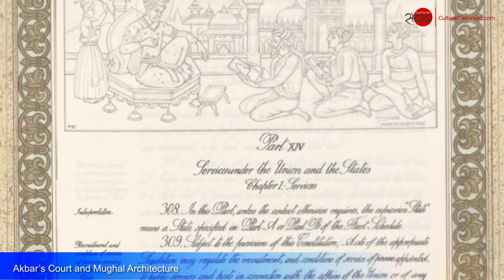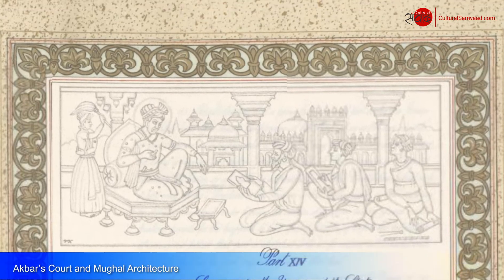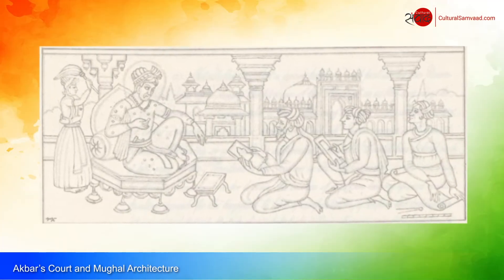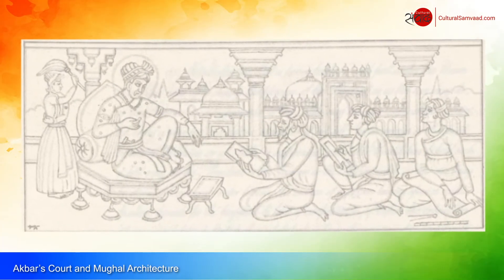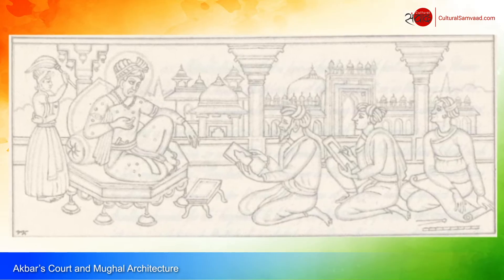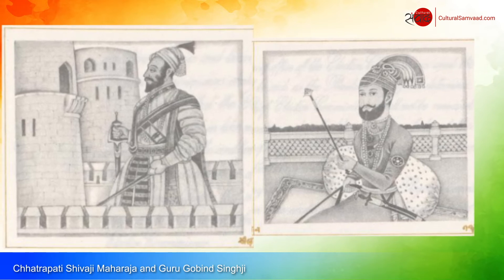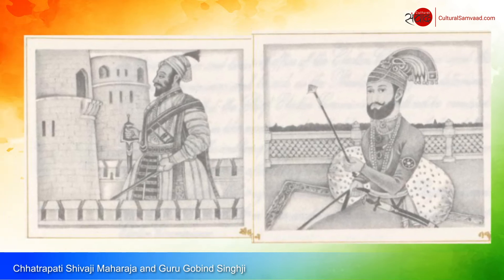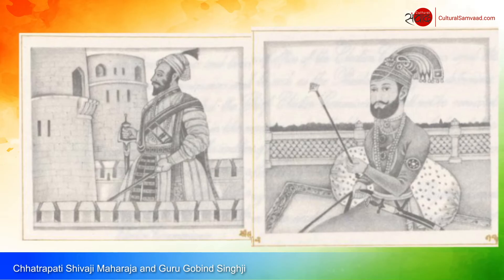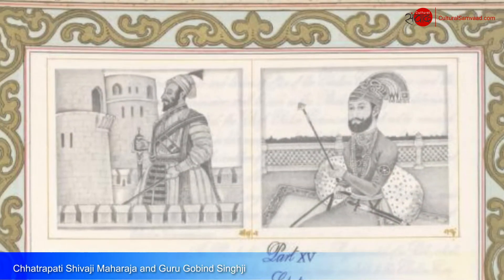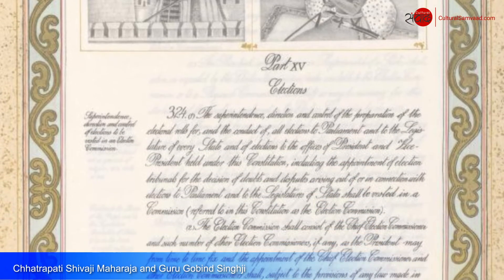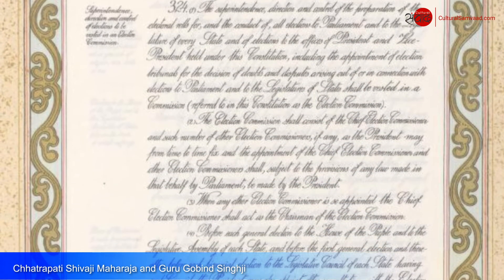Part 14, Services under the Union and the States, commences with a scene from the court of Emperor Akbar in which imposing masterpieces of Mughal architecture serve as a backdrop. The valiant Maratha king Chhatrapati Shivaji Maharaj and the dauntless last Guru in the Sikh tradition, Guru Gobind Singh Ji — who established the Khalsa — occupy a place of pride in Part 15, which deals with elections.